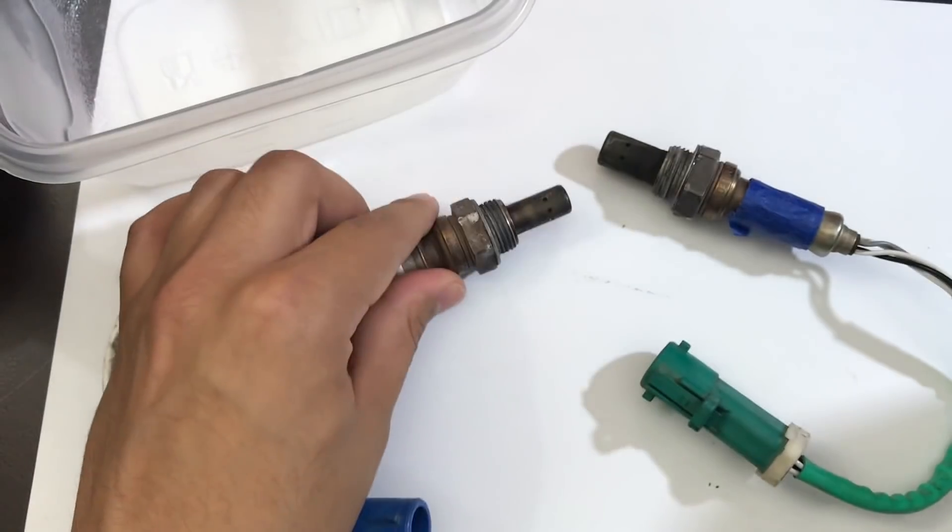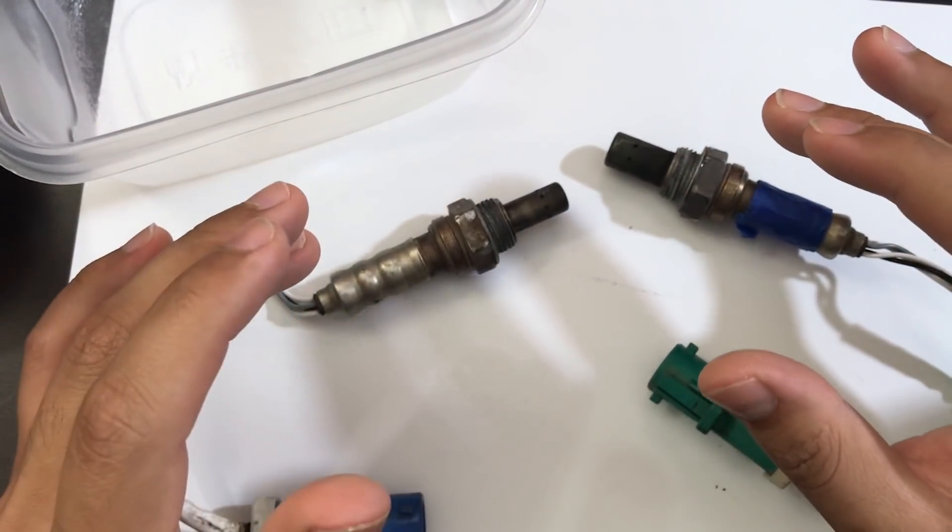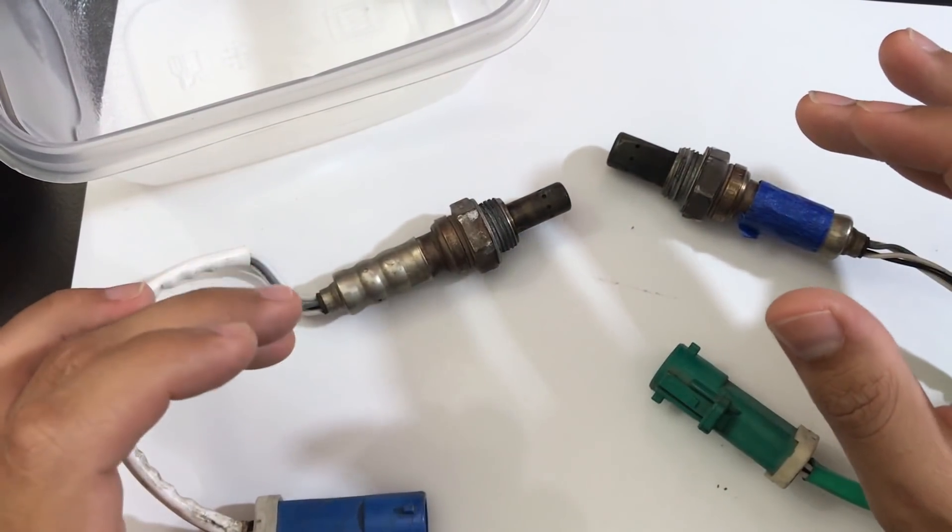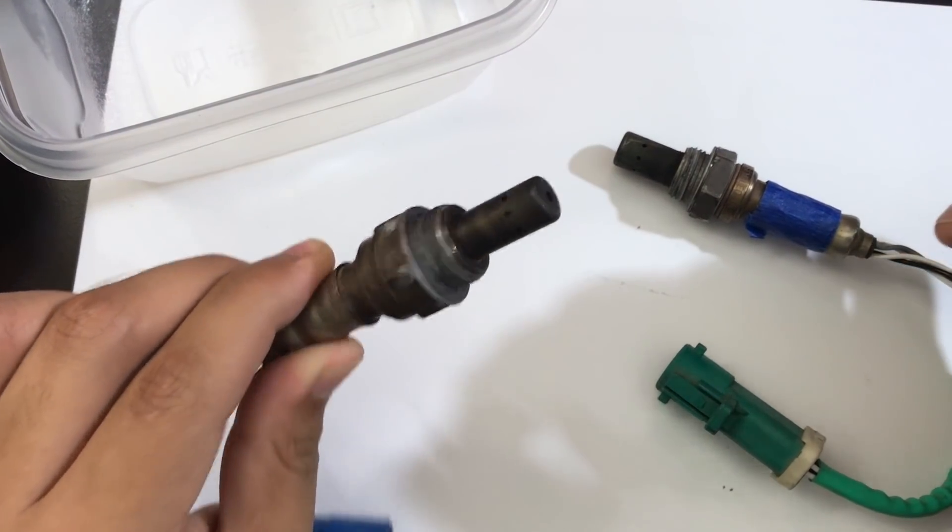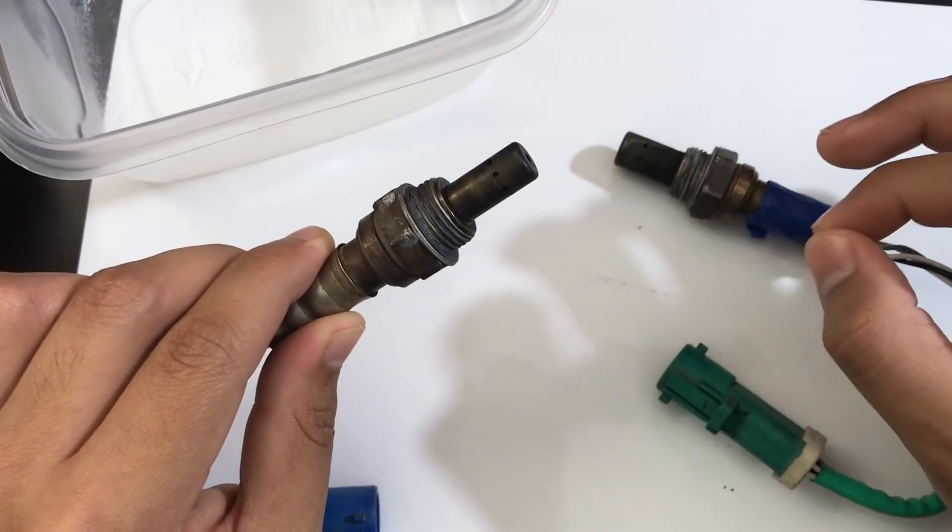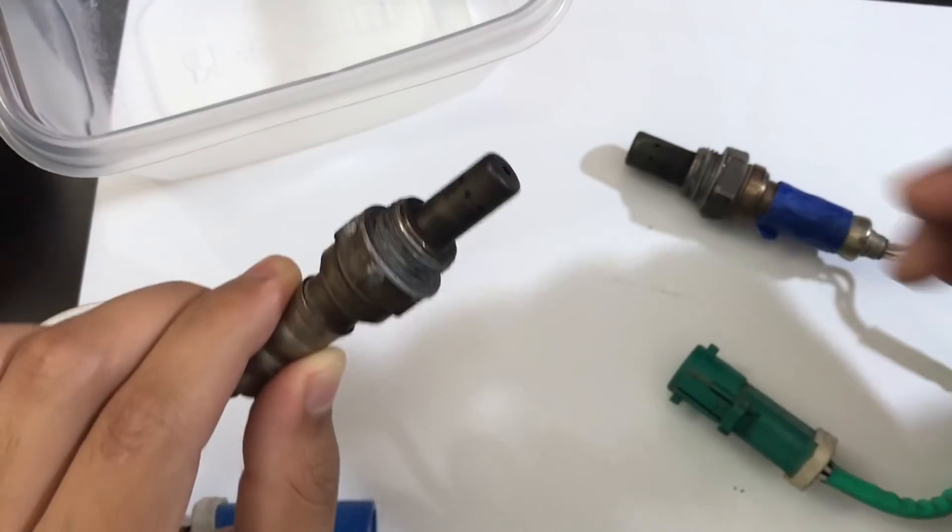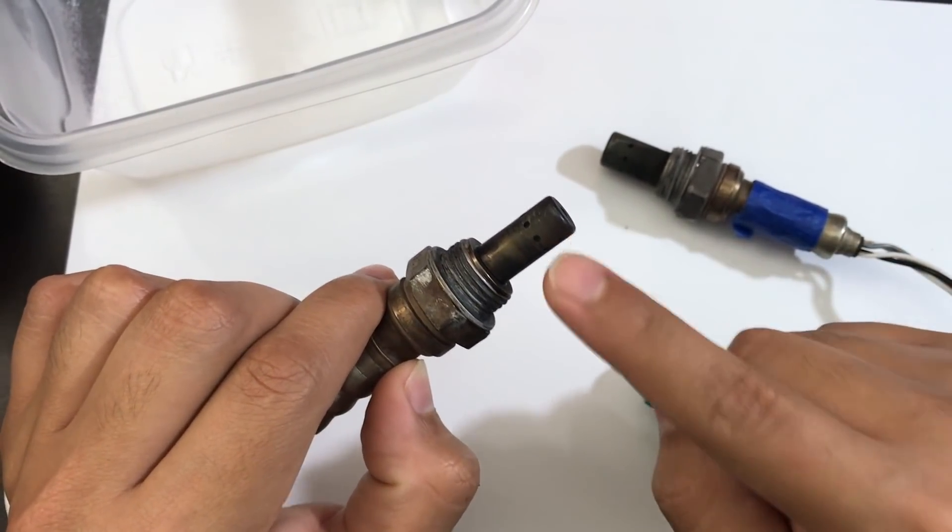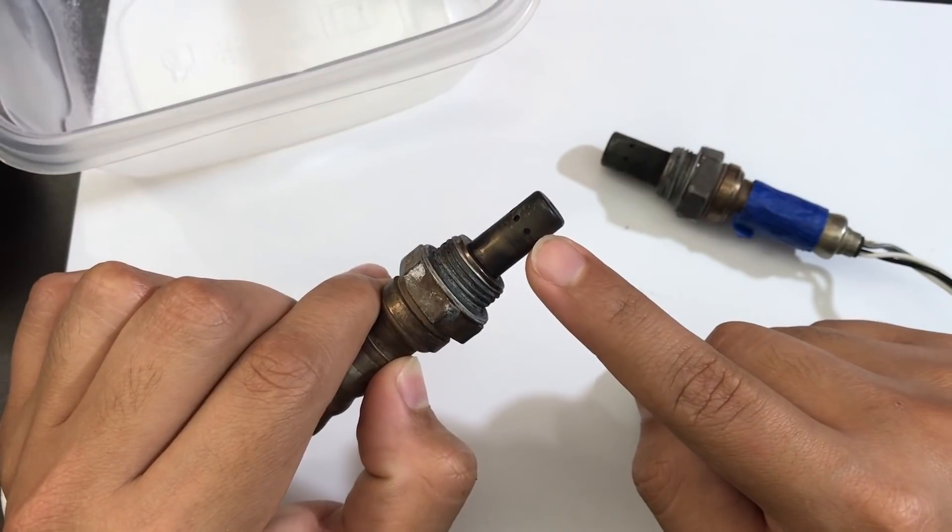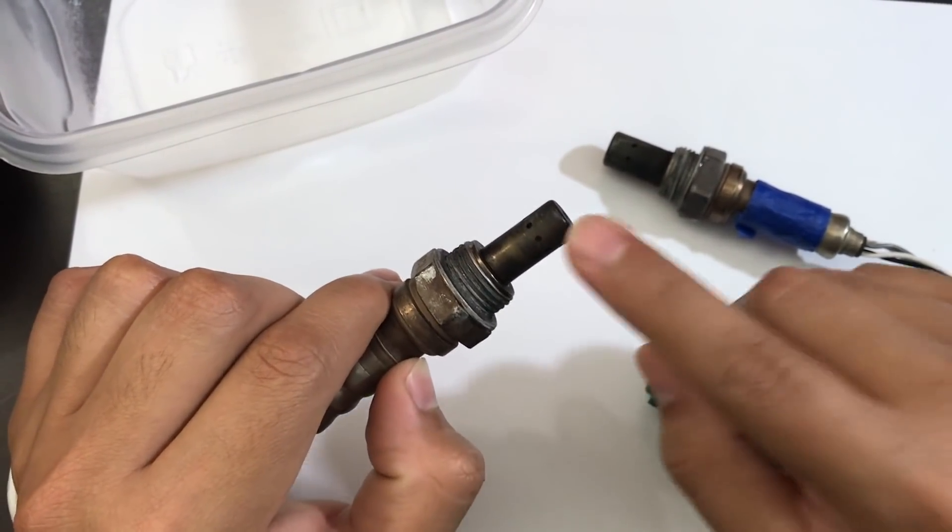Instead of using lemon juice, you'll be better off using fuel cleaners. Fuel cleaners is probably one of the best ways to clean an O2 sensor. Basically, just soaking these sensors in fuel cleaner or even carb cleaner as well. But lemon juice, I would not recommend it. This O2 sensor still had carbon inside the sensor head here, and using just a toothbrush and lemon juice was not enough to clean these O2 sensors.